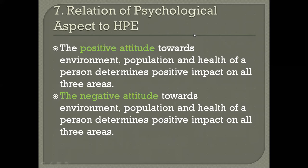We have discussed the relationship of different aspects — physical, biological, socio-cultural, economic, science and technological, political, and psychological — to health, population, and environment. I hope you understood it. We will meet in the next class. Thank you.